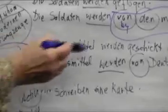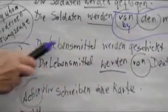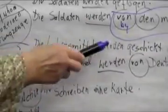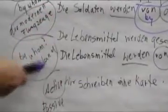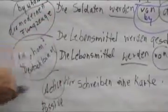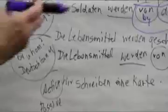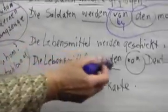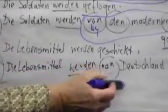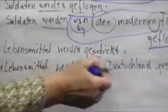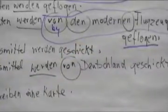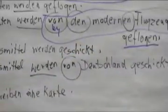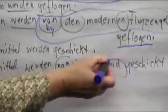Let me do another one. Die Lebensmittel werden geschickt — the groceries are being sent. Now, by whom are they being sent? Deutschland. We're adding a country. Die Lebensmittel werden von Deutschland geschickt. Deutschland has no article, so we just add Deutschland directly.